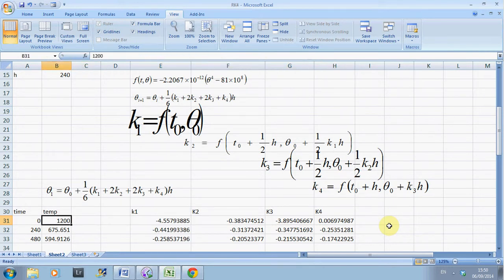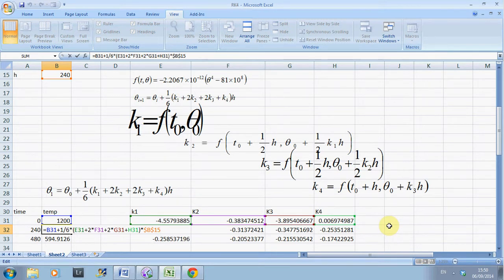Now, here. So, my new temperature is my old temperature, plus 1/6 brackets, K1, plus 2K2, plus 2K3, plus K4.